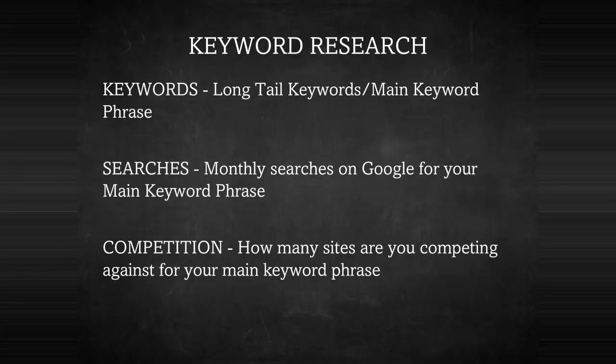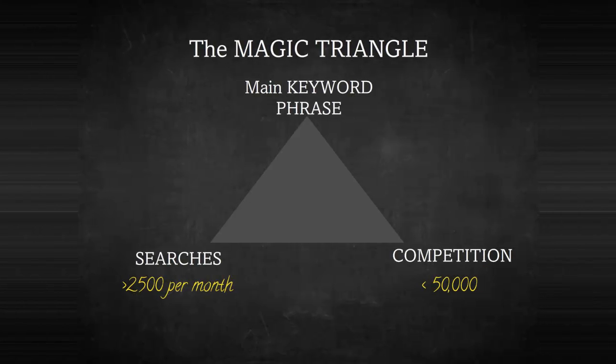Keyword research will assist in finding the right long-tail keywords or main keyword phrase — the phrase people put into Google that we're going to build your site around. We need to understand that there are enough monthly searches for that keyword phrase, and understand the competition, meaning how many other sites you're competing against. These three elements make up my magic triangle: finding a main keyword phrase with more than 2,500 searches a month and competition of 50,000 sites or less.